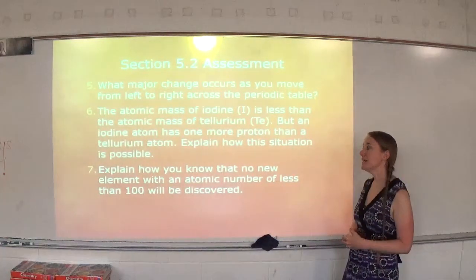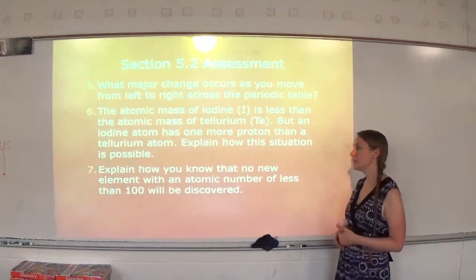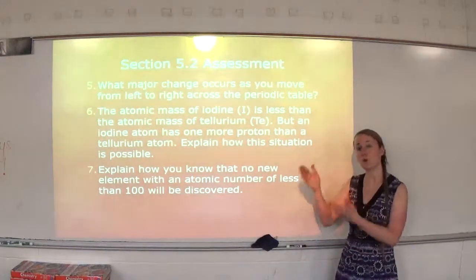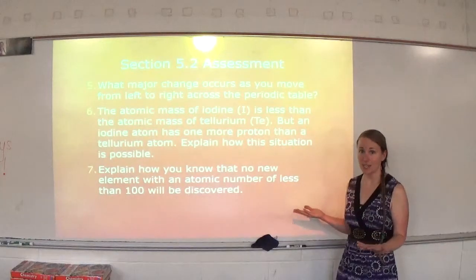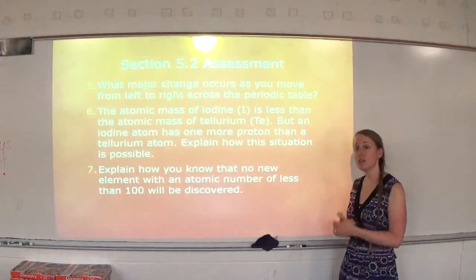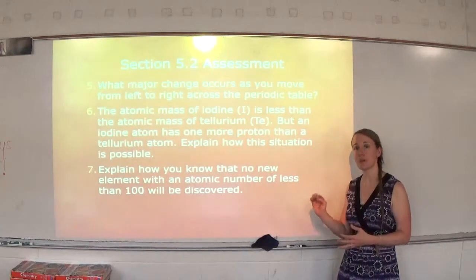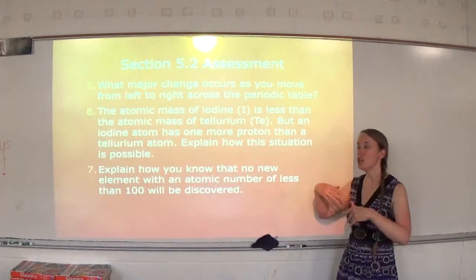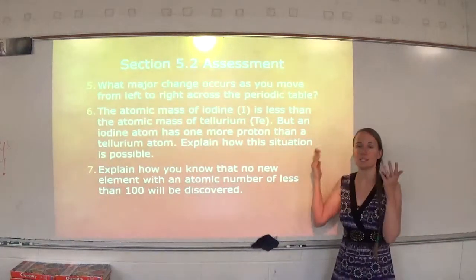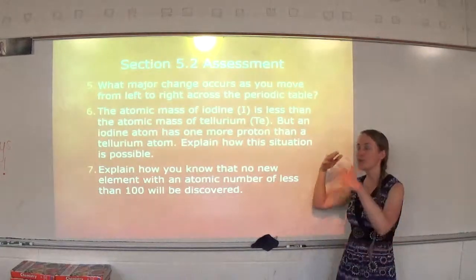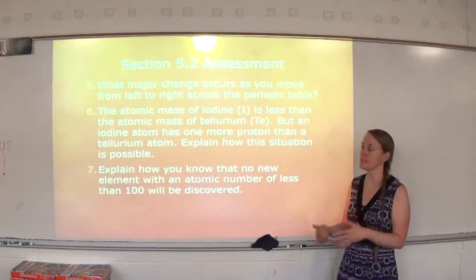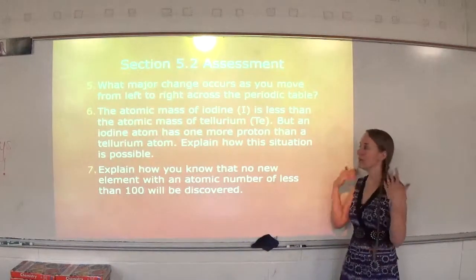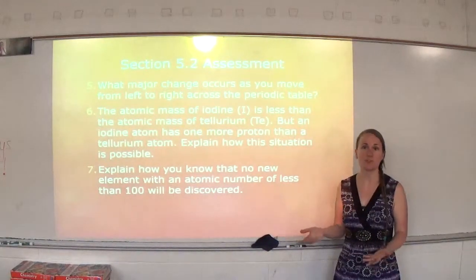Number seven: explain how you know that no new element with an atomic number of less than 100 will be discovered. If you look at the periodic table, 1 through 100 is already taken. We already know that if an element has a certain number of protons, it has to be that same element — I can't find another atom with five protons and have it not be boron. Since 1 through 100 are already filled out on the periodic table, we can't find any other elements with those atomic numbers.